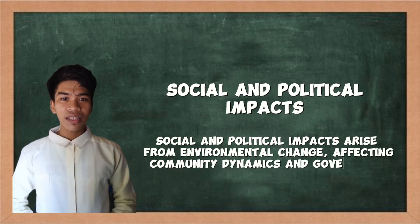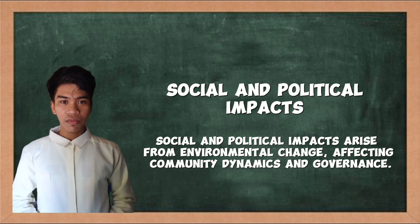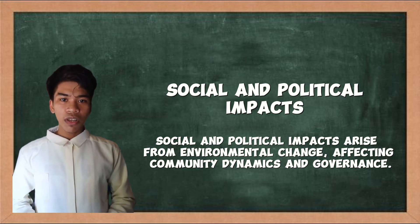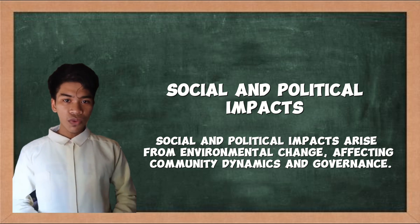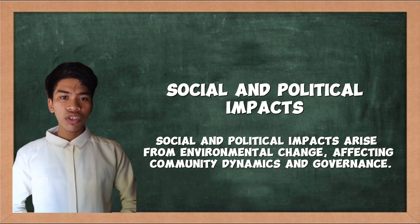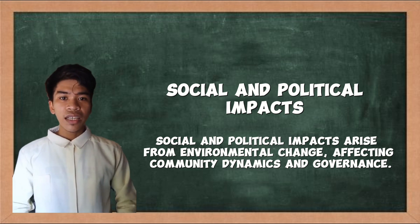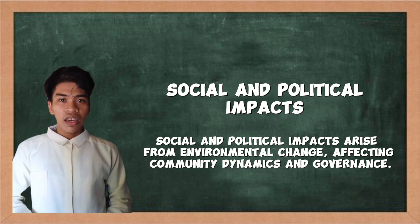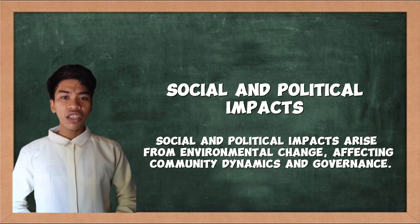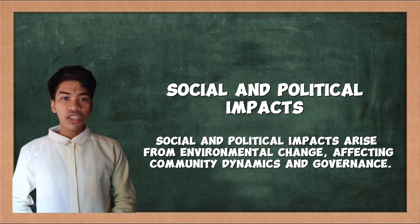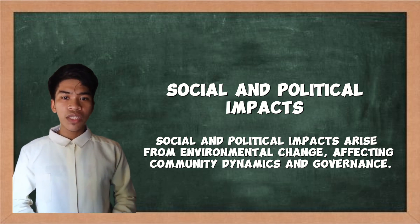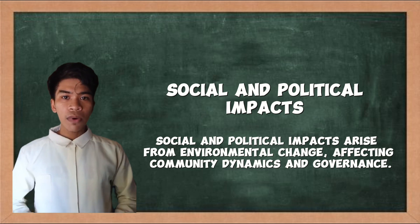When a disaster happens, it can really disrupt things for people and the government. Socially, disasters can make people lose their homes, even their lives, and affect their mental well-being. People might struggle to find food, water, and a safe place to stay. It can also break up communities and erode trust. Politically, disasters reveal whether the government is doing a good job. If they handle things badly, people might lose trust in them. Disasters also highlight issues like who gets help and who doesn't, which can make people question fairness. So, disasters are not just about physical damage — they shake up society and politics in significant ways.